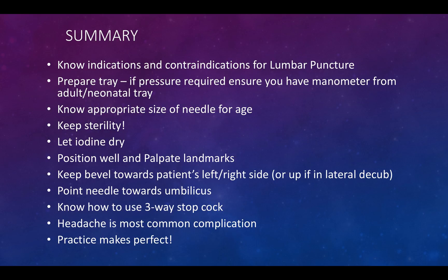In summary: know the indications and contraindications for lumbar puncture. Make sure your tray is prepared prior to the procedure, and find all your landmarks on the patient before becoming sterile. Know the appropriate needle size for the patient's age. Stay sterile, don't cause an infection, and make sure the iodine dries. Positioning is crucial — palpate those landmarks. Keep the bevel towards the patient's flank, point the needle towards the umbilicus, and stay at 90 degrees to the bed. Know how to use the three-way stopcock appropriately and don't lose CSF. Headache is the most common complication, and as always, practice makes perfect — you can continue to practice in our simulation center.